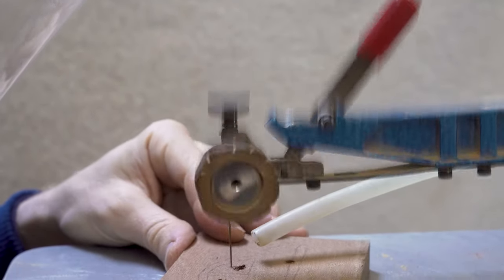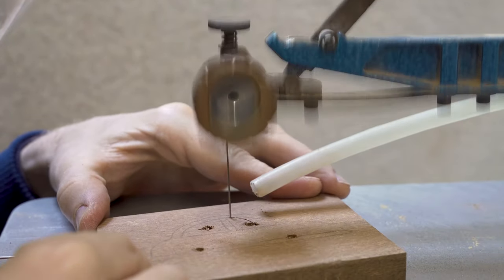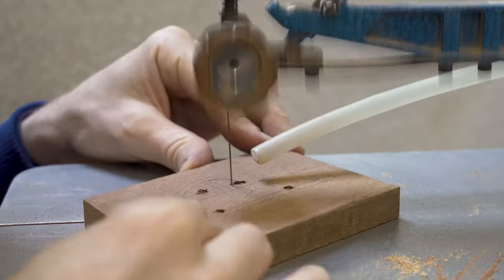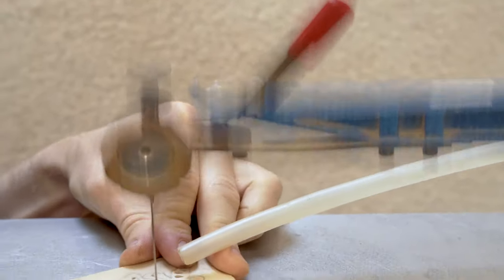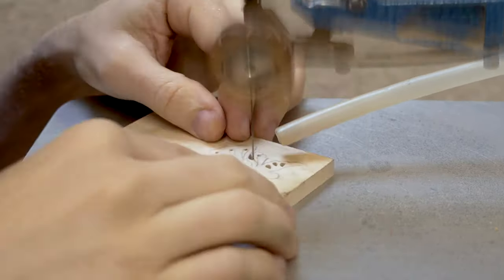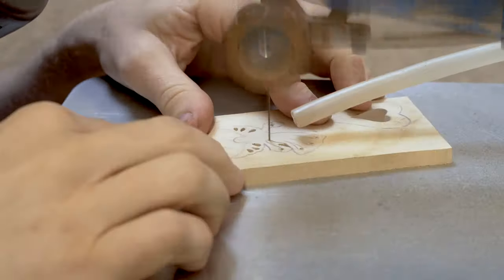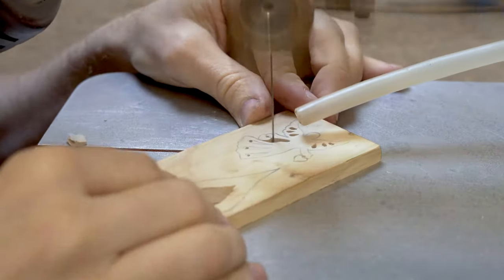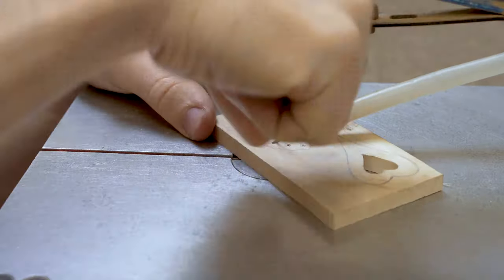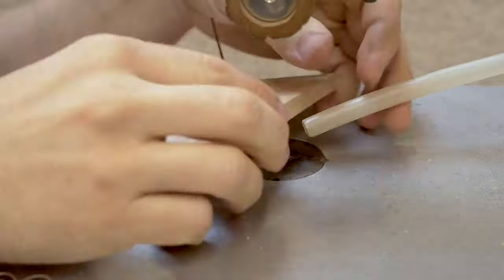Now on different machines, you'll have different systems. But again, I would advise you in a similar way if you're not using a Hegner scroll saw. If you have the opportunity to purchase a quick release clamp and you are doing pierce work on a daily basis, then I would suggest that purchasing that quick release clamp will be beneficial to the time that you're spending with your scroll saw.